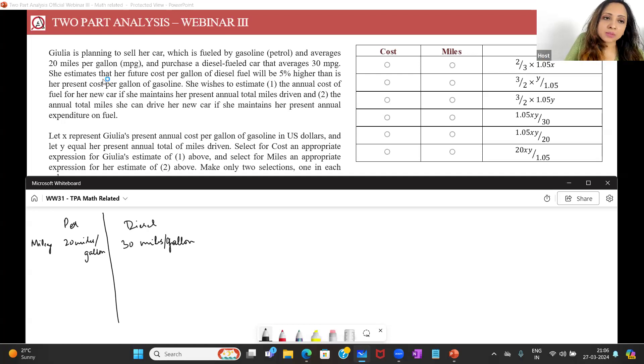She estimates that her future cost per gallon of diesel fuel will be five percent higher than her present cost per gallon of gasoline. So let's say if this is one, this is going to be five percent higher, so 1.05. This will be the cost dollar per gallon, cost per gallon.